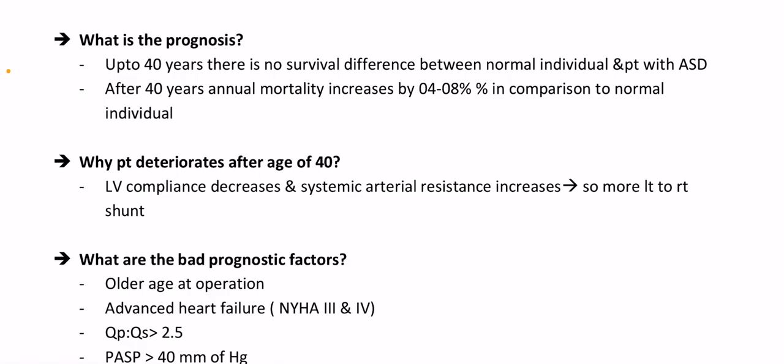What is the prognosis of ASD? Up to 40 years, there is no survival difference between a normal individual and a patient with ASD. After 40 years, annual mortality increases by 4–8% compared to normal individuals. Why do patients deteriorate after age 40? LV compliance decreases and systemic arterial resistance increases, leading to more left-to-right shunting.